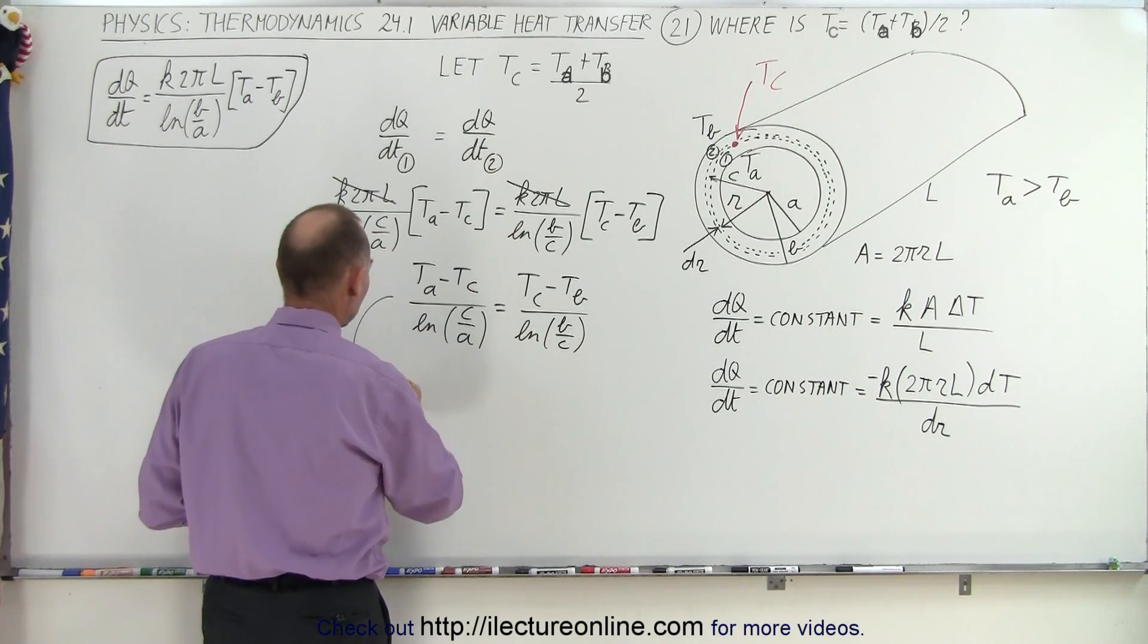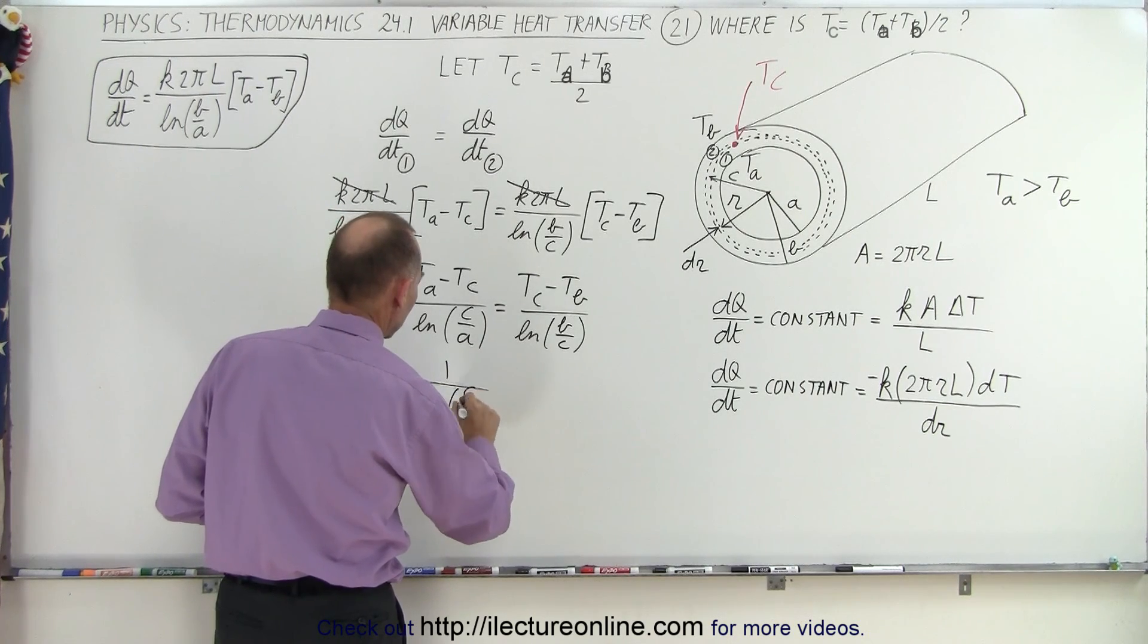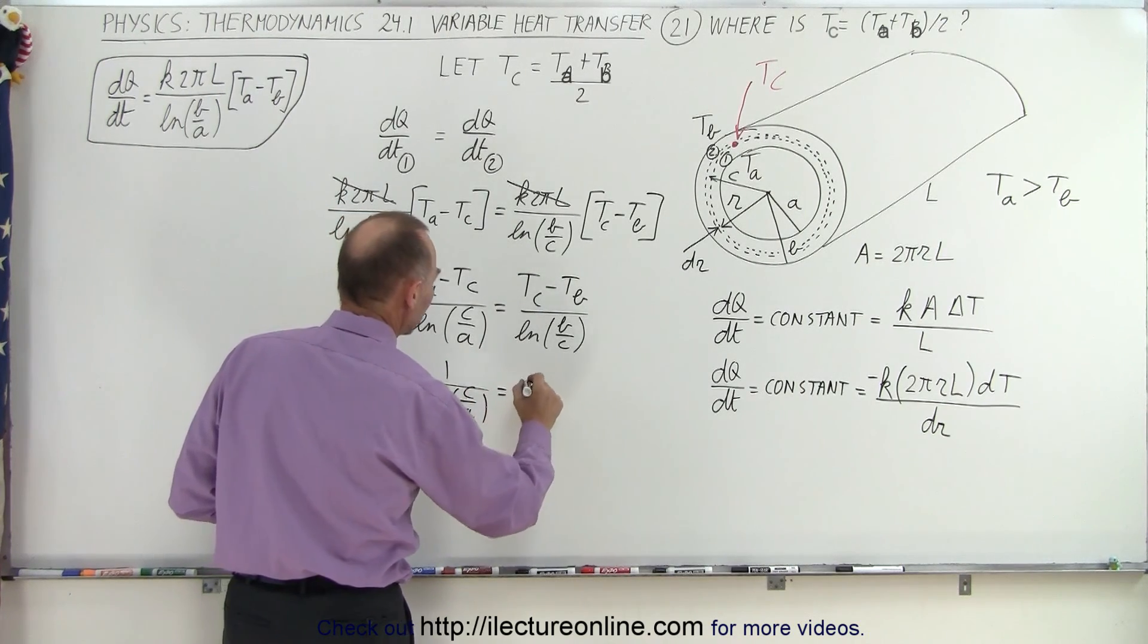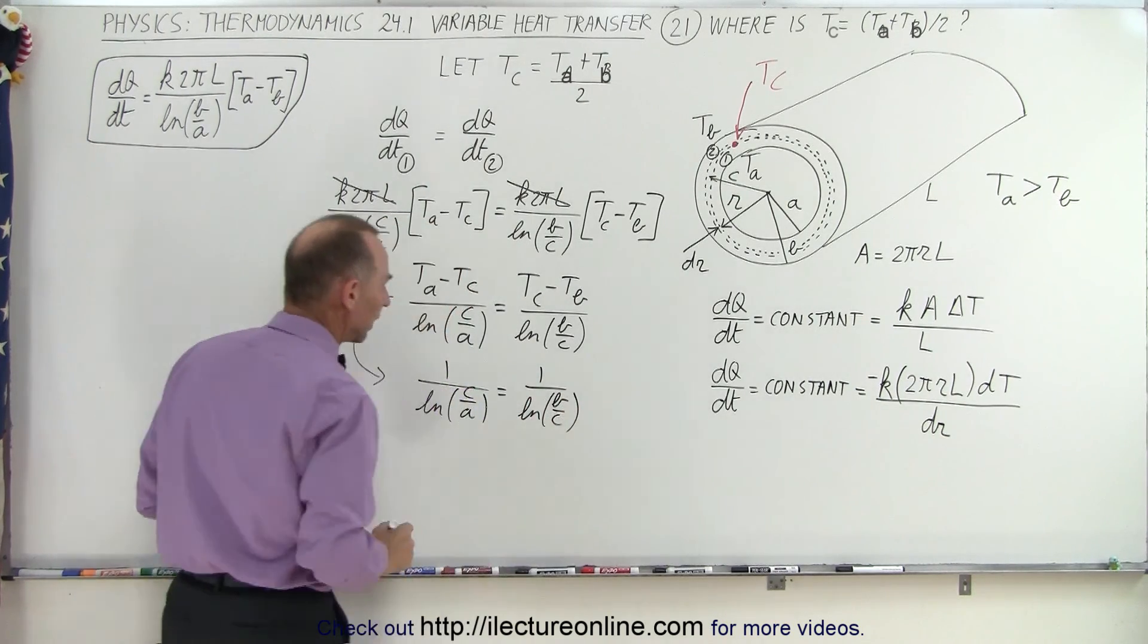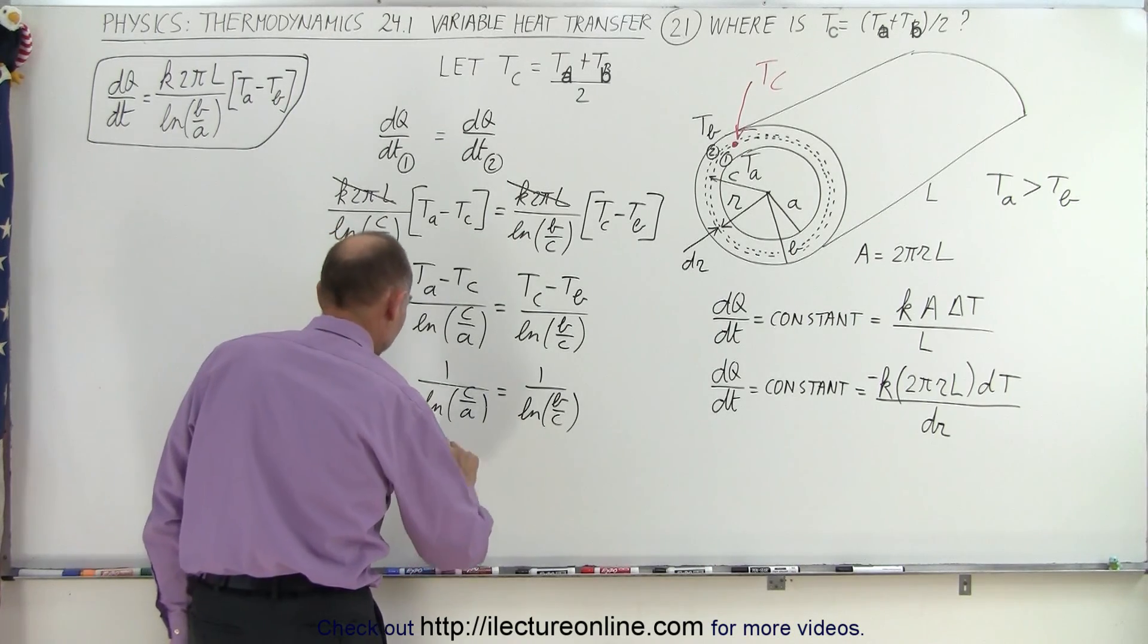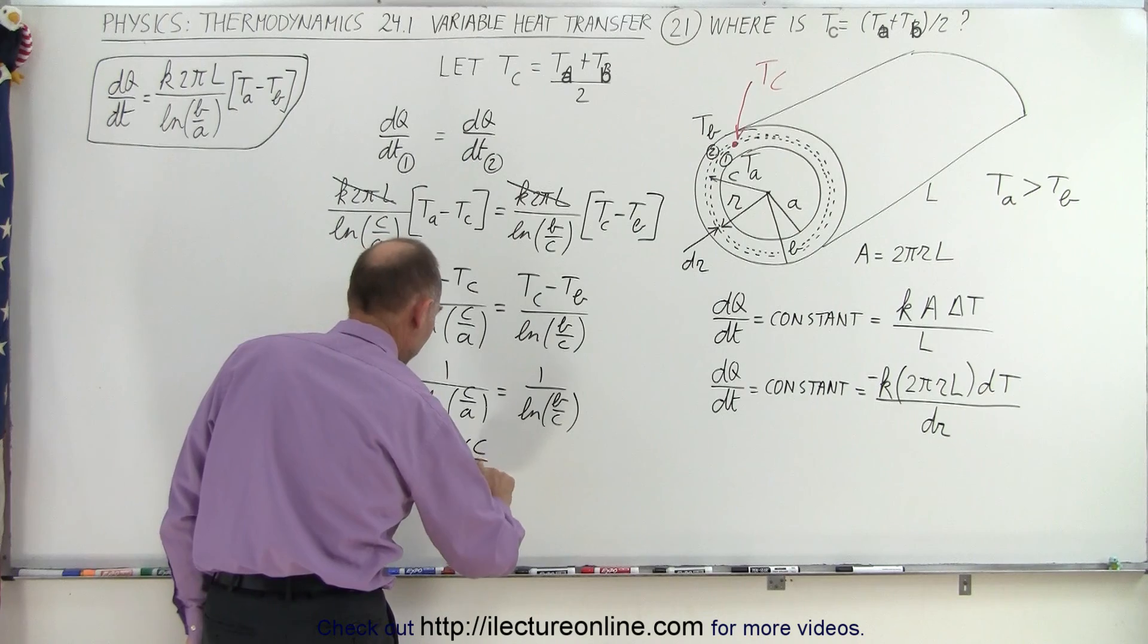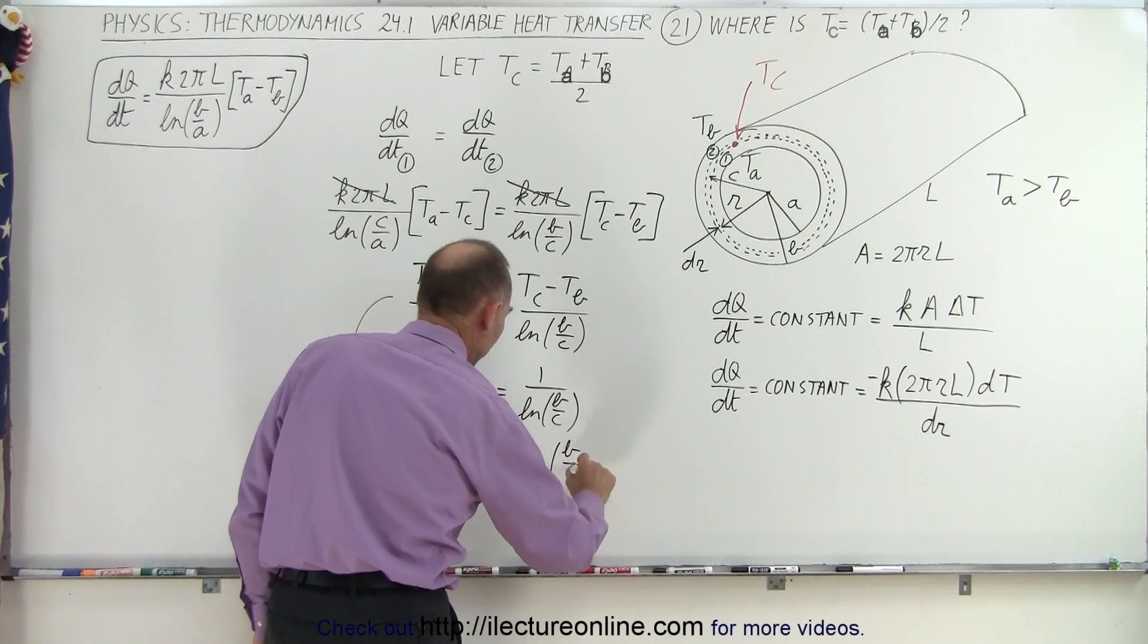we can write this as 1 over the natural log of C over A is equal to 1 over the natural log of B over C. And if that's the case, then we can say, therefore, we can conclude that the natural log of C over A must equal the natural log of B over C.